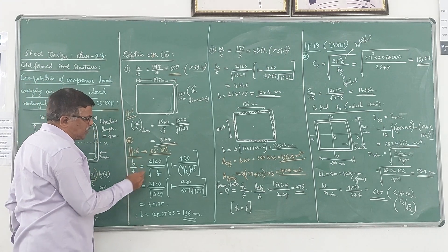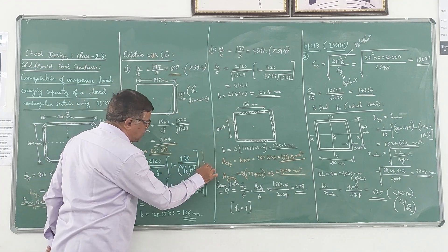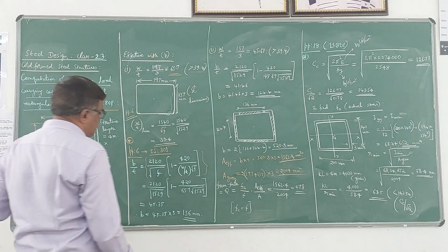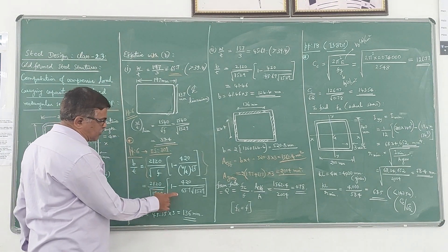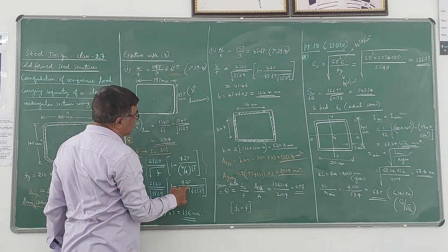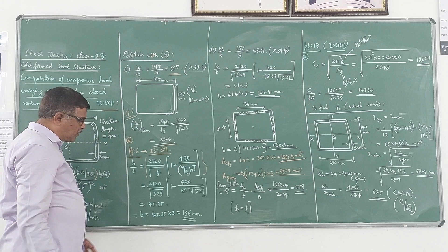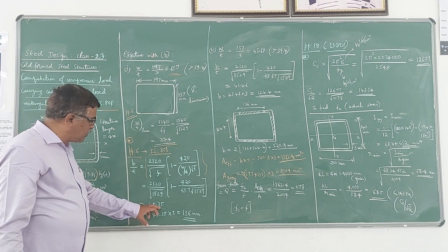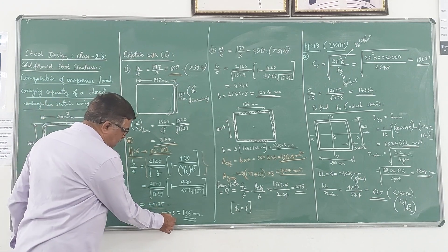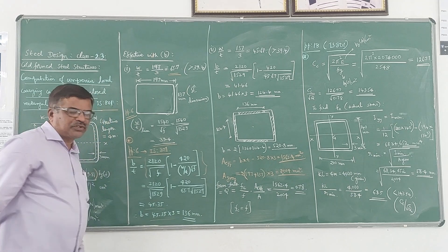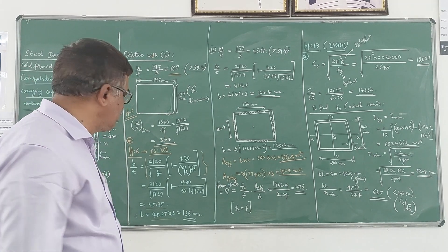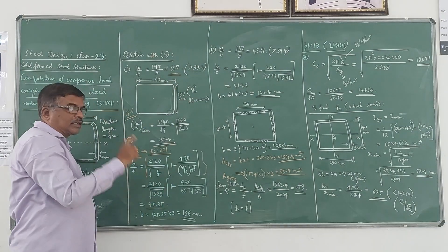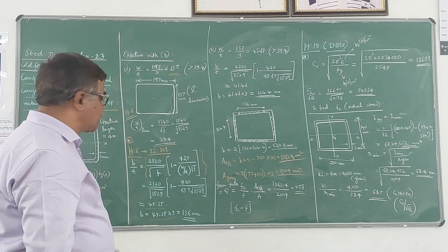Since W/T exceeds the limiting value, the effective B/T ratio is given by a formula from IS 8.1, where F must be expressed in kg-force per cm square. Substituting F = 1529 kg/cm² and W/T = 65.7, we get B/T = 45.35. Therefore B = 45.35 × 3mm = 136mm. So 136mm is the effective width along the X direction — the overall width was 197mm but the effective width is only 136mm.